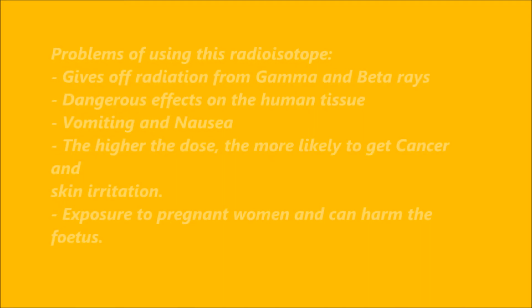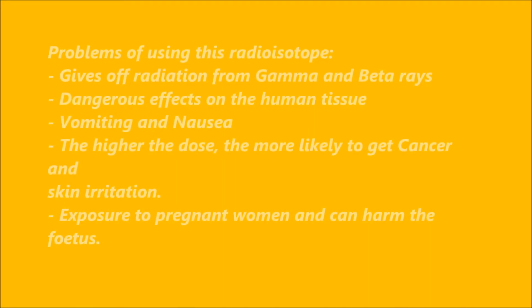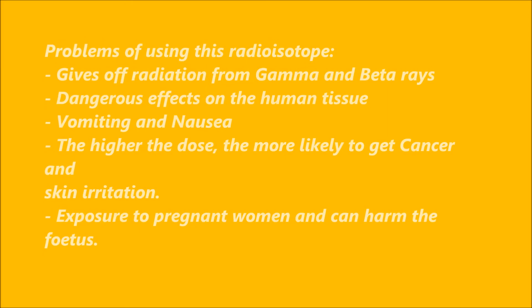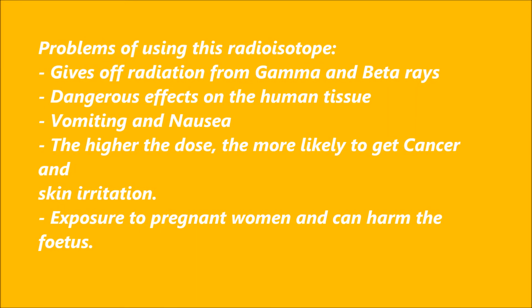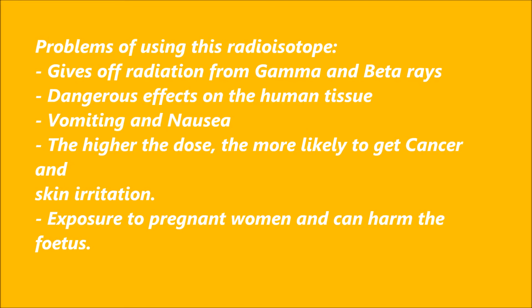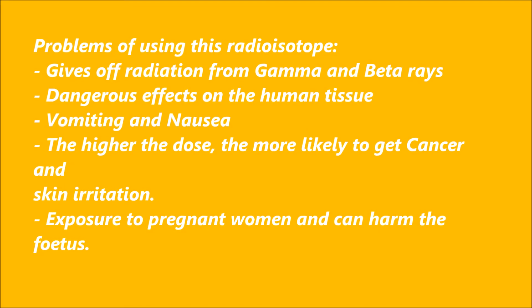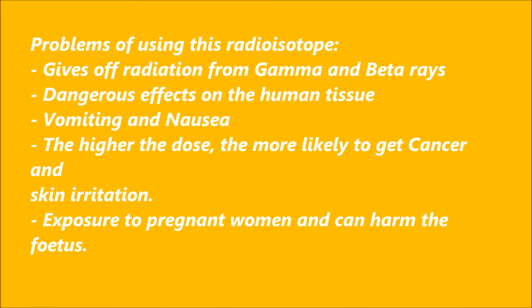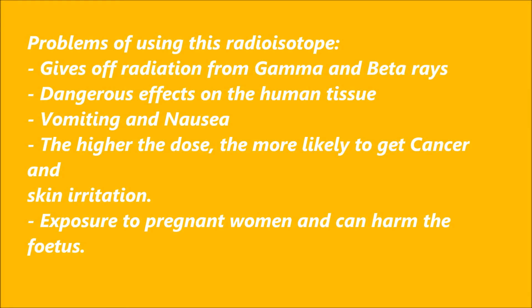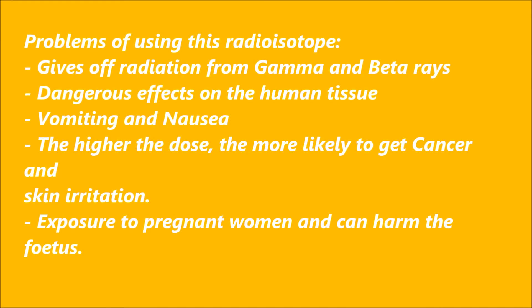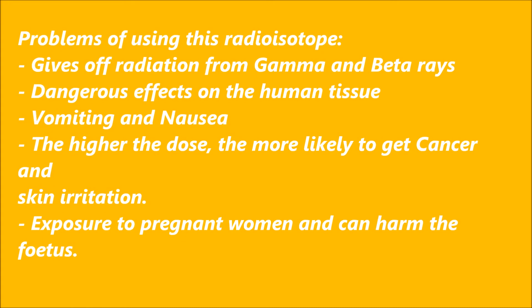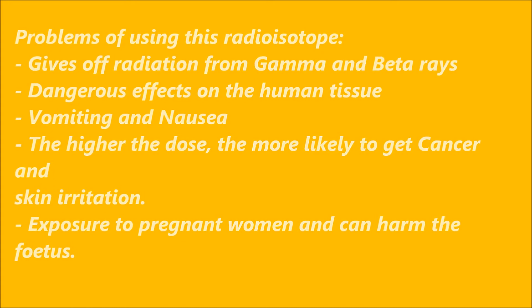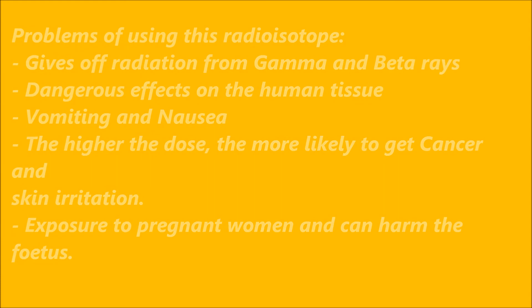The problems of using Technetium-99 is that it gives off radiation in the form of gamma and beta rays, which has a bad effect on human tissue. In small doses, it can cause vomiting and nausea. In high doses, it causes cancer and skin irritation. Other risks include exposure to pregnant women, as it may harm the fetus, and allergic reaction to the injected chemical.